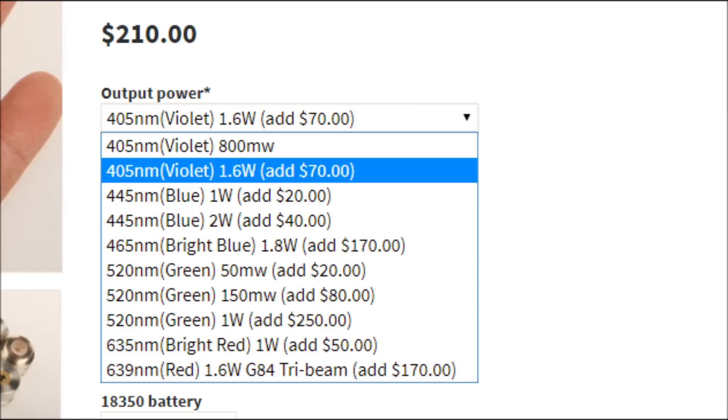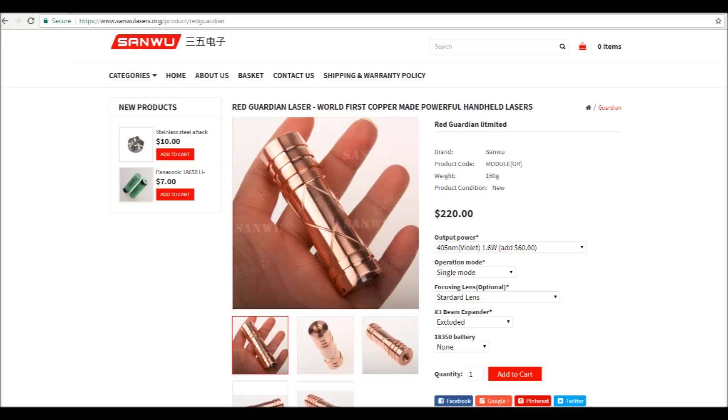They sell these Guardian series lasers in several different wavelengths and powers all for different prices. Some of you might have just seen my most recent review of the blue version of this laser at 1 watt, and they also sell a copper version of this laser with the grid groove handle style and that's an additional $10 fee.